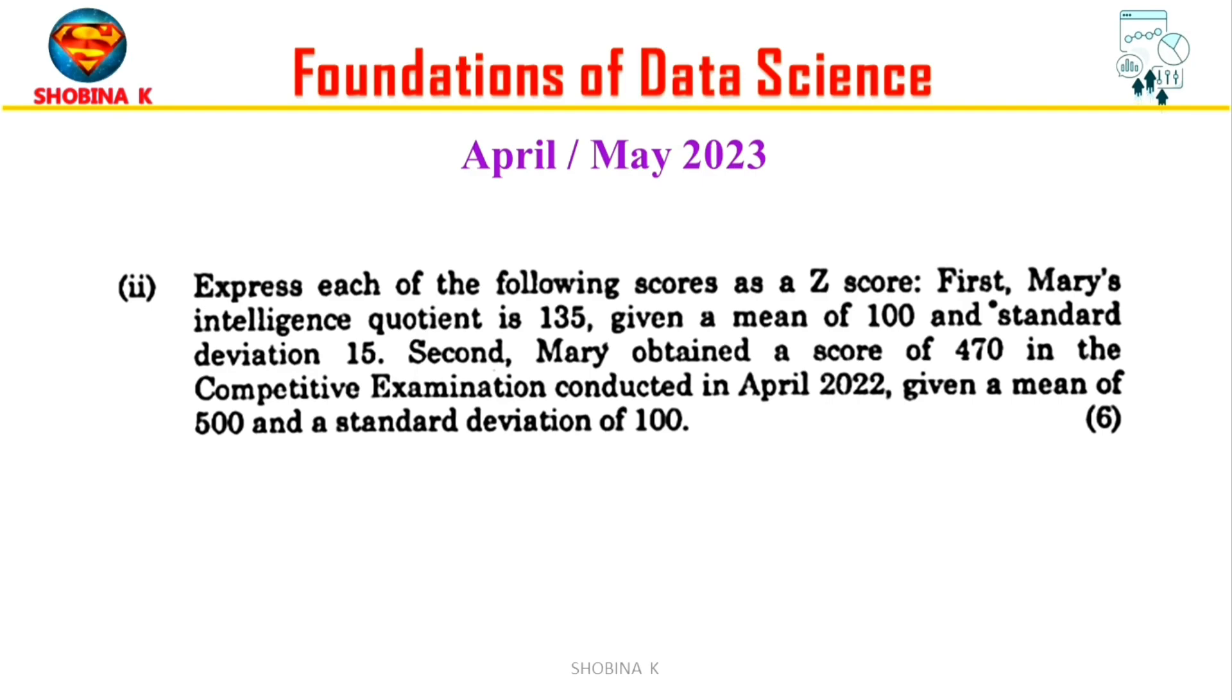Now let's solve this question. Here we need to express each of the following scores as a z-score. First, Mary's intelligence quotient is 135, given a mean of 100 and standard deviation 15. Second, Mary obtained a score of 470 in the competitive examination conducted in April 2022, given a mean of 500 and standard deviation of 100.